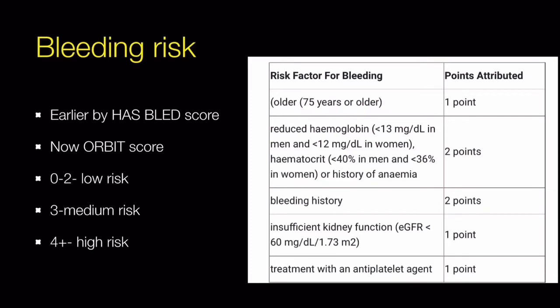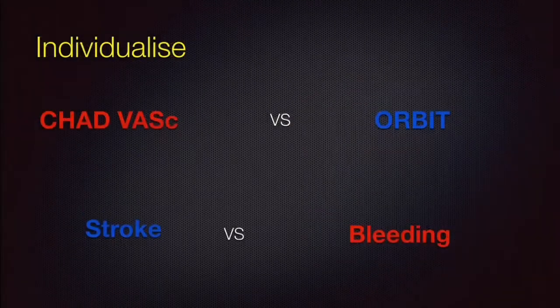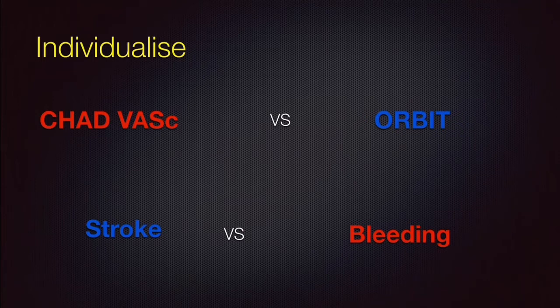The ORBIT score stands for: O — older individual (age >75); R — reduced hemoglobin; B — bleeding history; I — insufficient renal function (GFR <60); T — treatment with antiplatelet agent. A score of 0–2 indicates low risk; a score of 4 or more indicates high bleeding risk. Always weigh stroke risk versus bleeding risk using CHA₂DS₂-VASc and ORBIT score before starting anticoagulation.